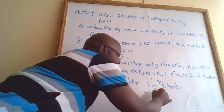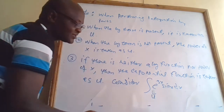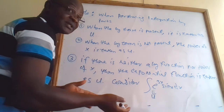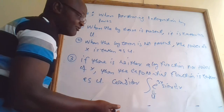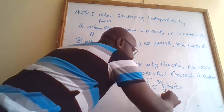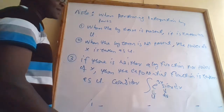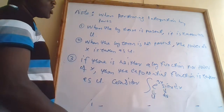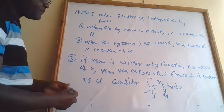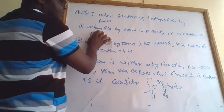Therefore, e^(3x) would be my u. Once you assign u, what remains is now dv. So sin(x) dx would be my dv. Let us work out this example.